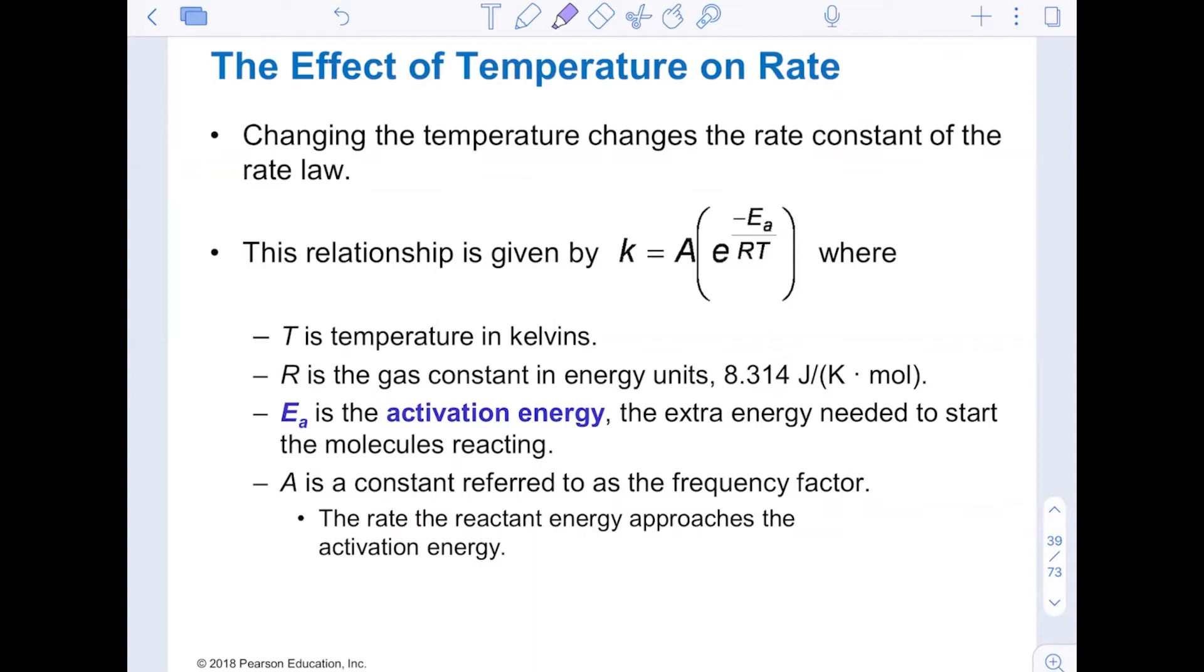Changing the temperature changes the rate constant of the rate law. So that is how temperature is actually going to affect us. It will directly affect the rate constant. So when we're looking at k here, this is the rate constant that we saw in all reactions. Now, how does it affect? Well, as temperature increases, typically what we see is that k will increase, and so the rate will effectively increase.